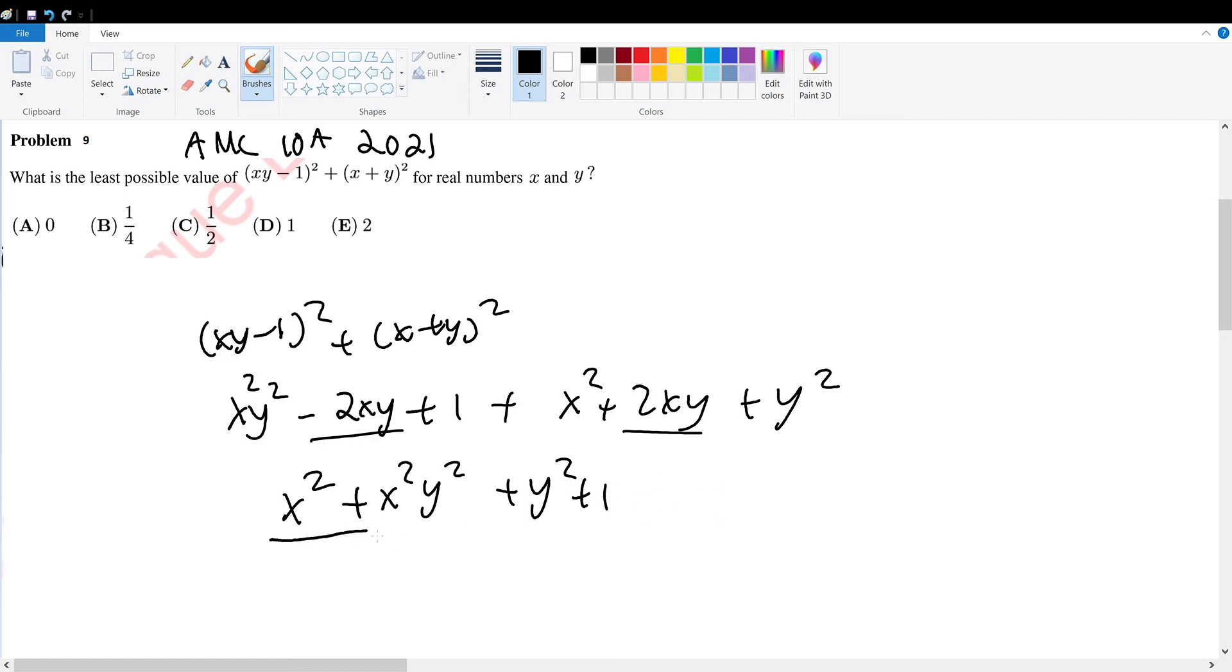We can factor out x squared here. So x squared times 1 plus y squared plus y squared plus 1 will give us 1 plus y squared times x squared plus 1.